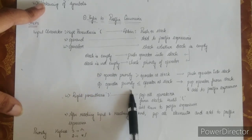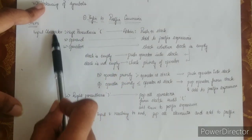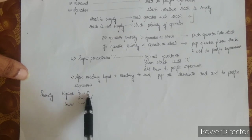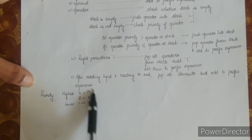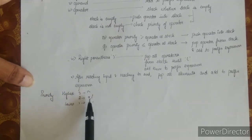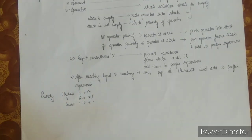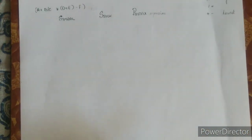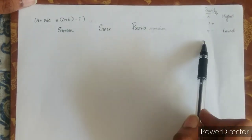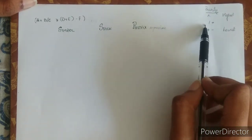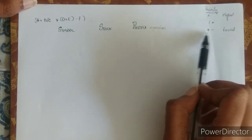I mentioned priority when the input character is an operator. You need to know the priority of operators: the highest priority is for the exponential operator, next comes multiplication and division, and the lowest priority is for addition and subtraction.